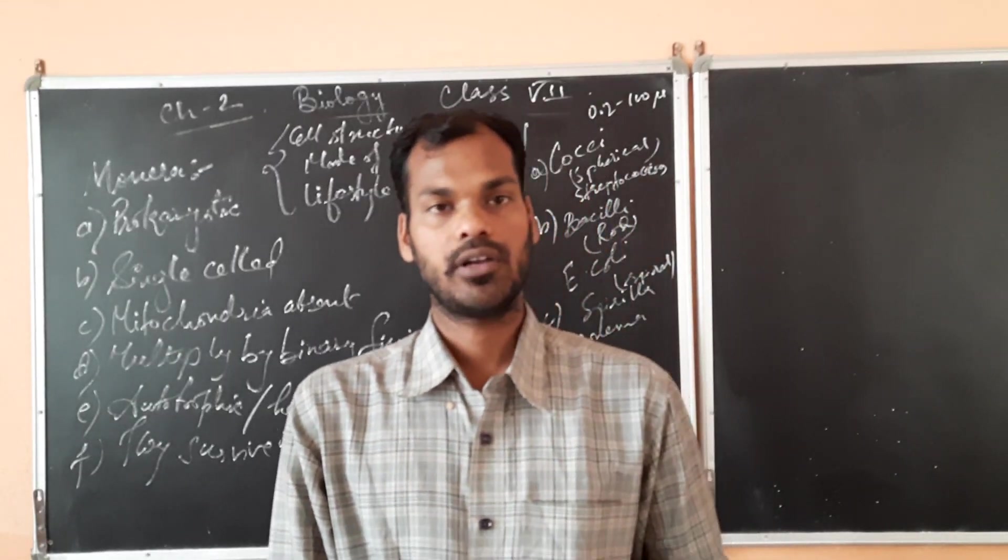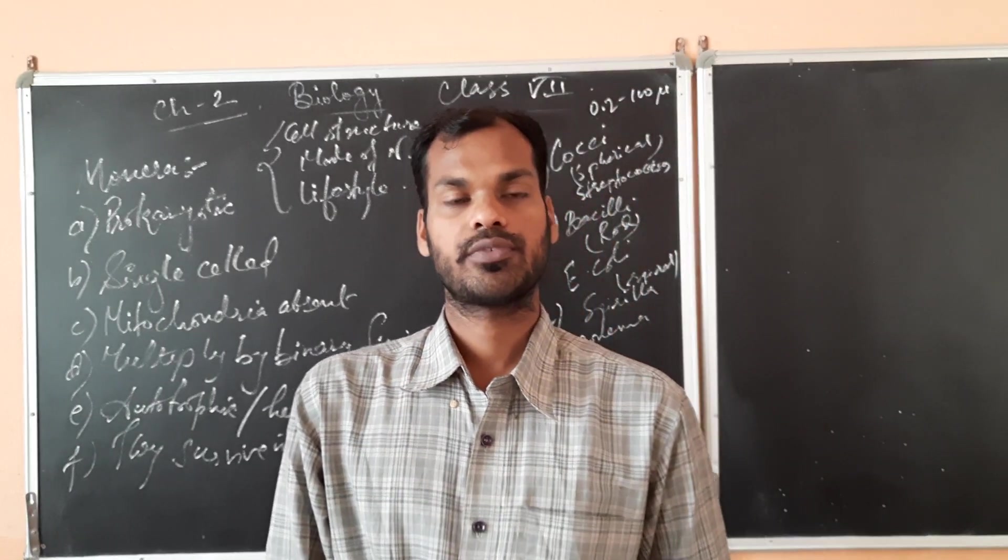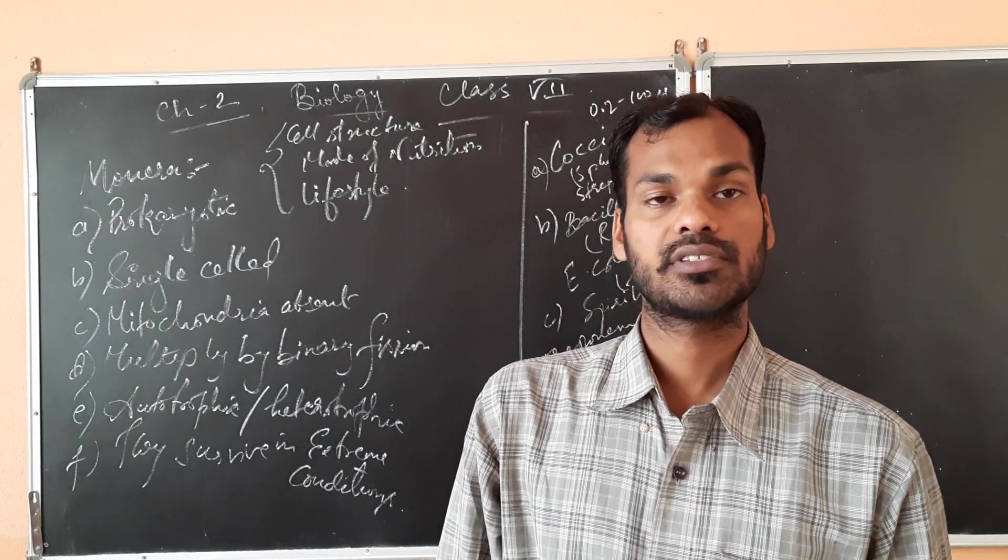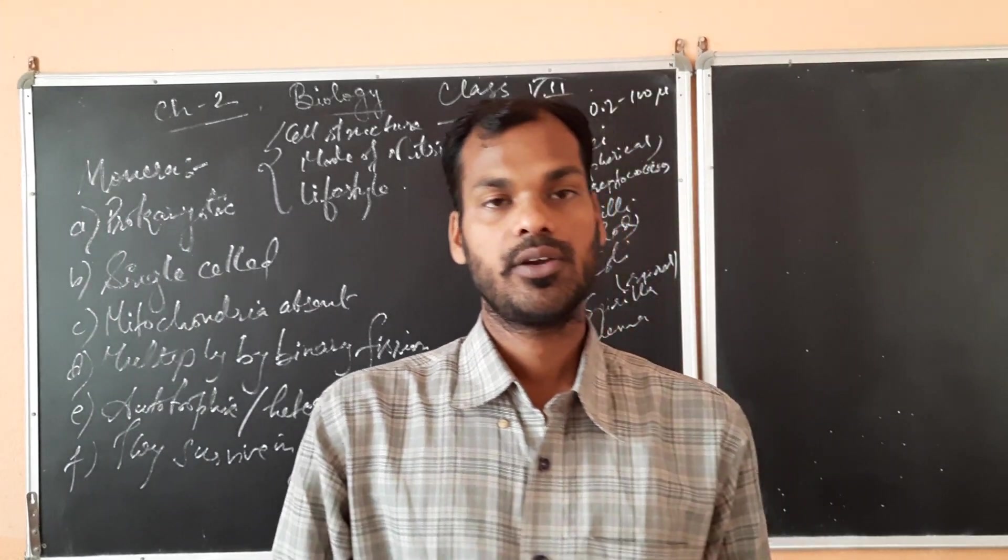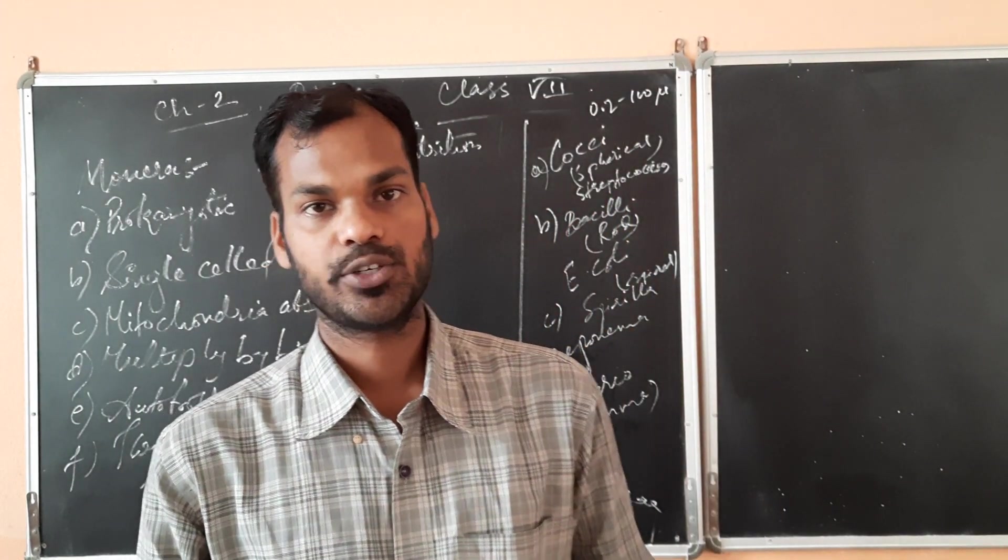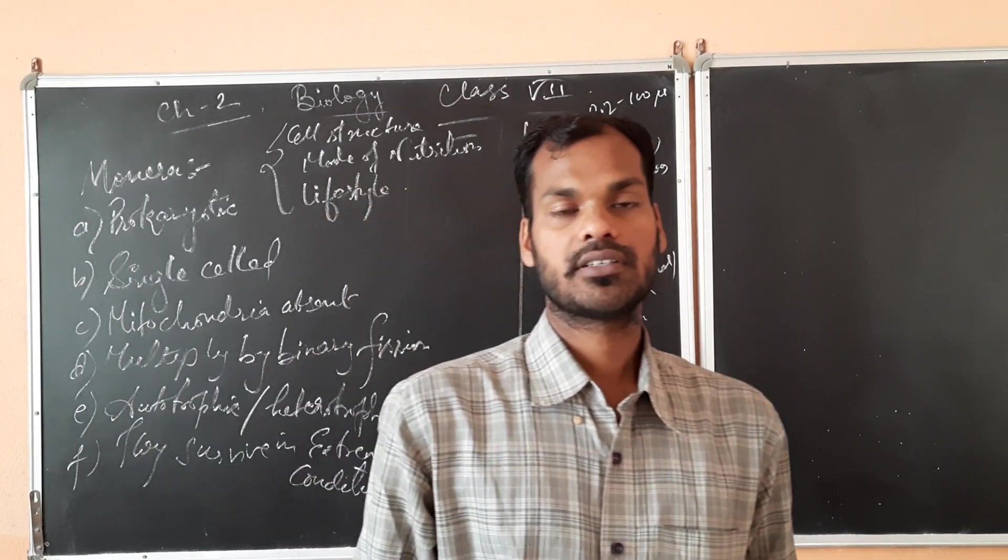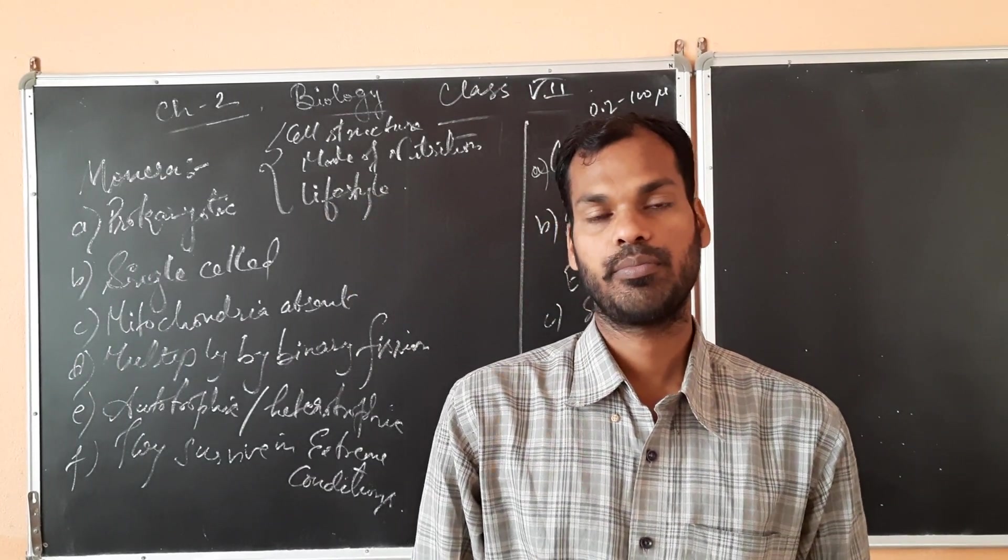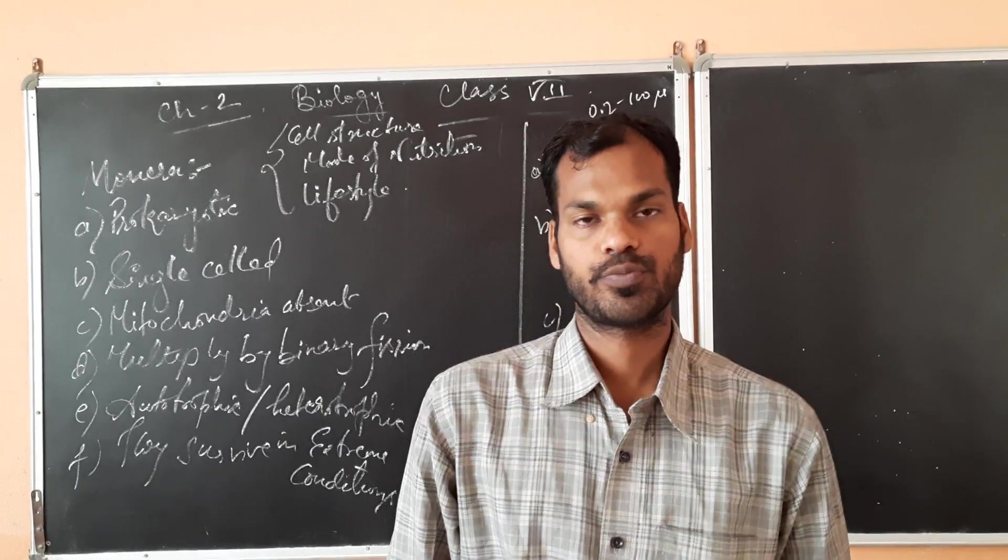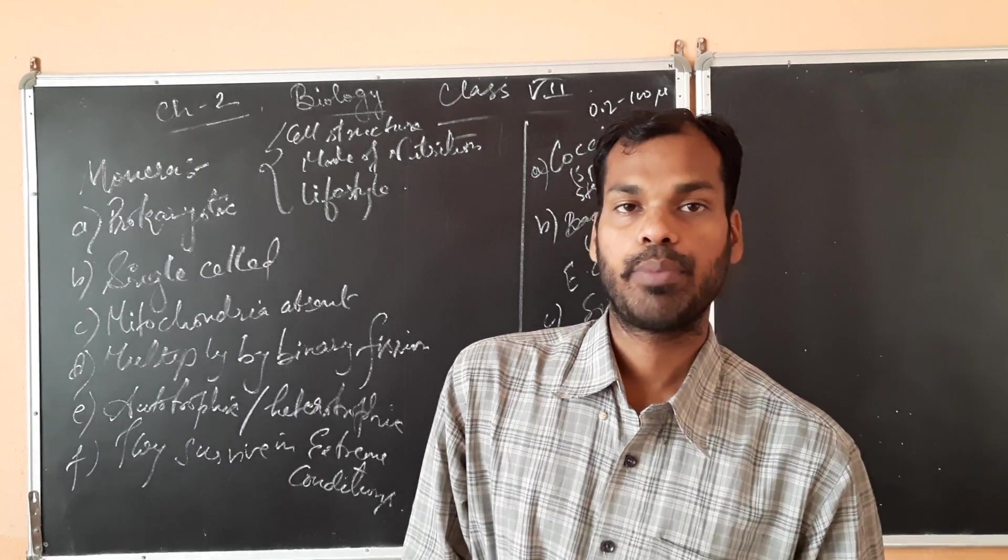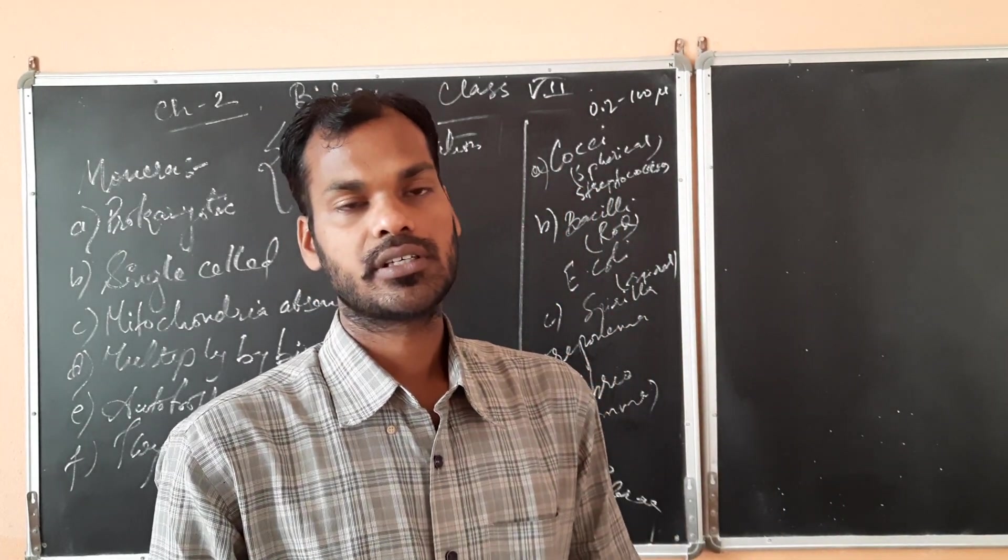Today I will discuss what all points led to the new system of classification or the modern system of classification. In the previous system of classification, all the organisms were divided into only two groups: one was plants and second was animals. Plants means they were stable at one place, animals they can move. But there was something which led to the confusion among the scientists as the organisms increased.